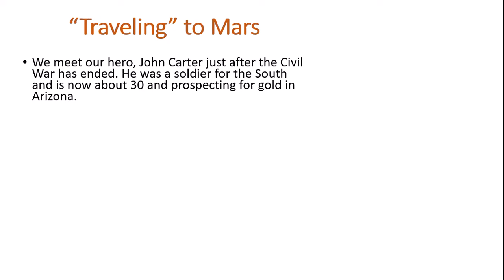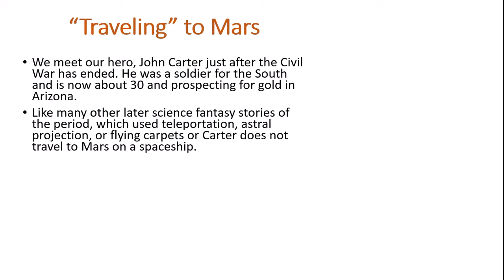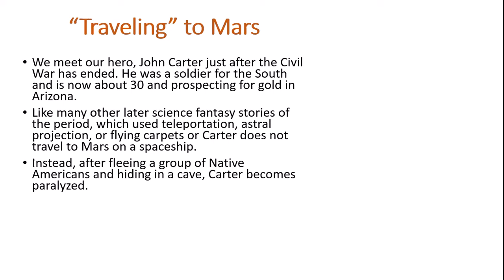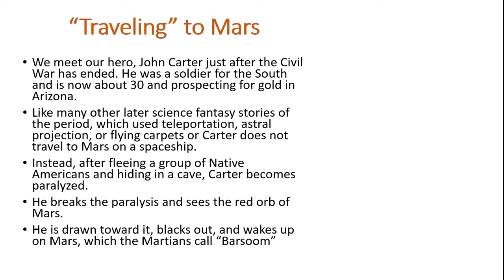Then we travel to Mars. If you're thinking about the hero's journey, this is the call to adventure. Our hero, John Carter, is introduced just after the Civil War has ended. He was a soldier for the South, he's about 30, and he's prospecting for gold in Arizona. Carter does not travel to Mars on a spaceship. Instead, he's fleeing from a group of Native Americans, hides in a cave, and becomes paralyzed. He breaks the paralysis, sees the red orb of Mars, is drawn toward it, blacks out, and wakes up on Mars.